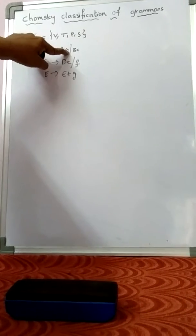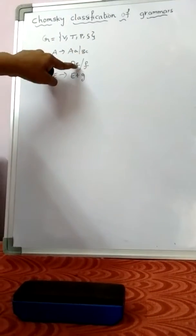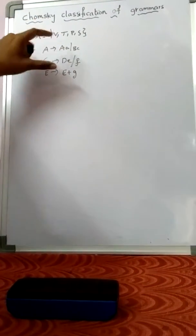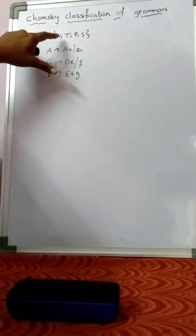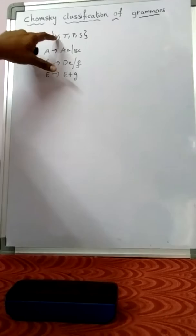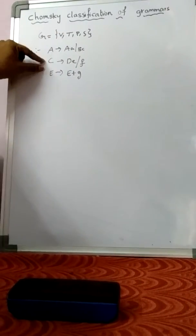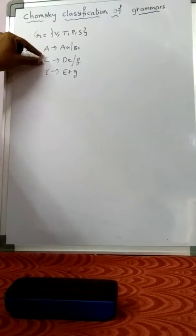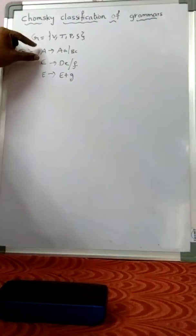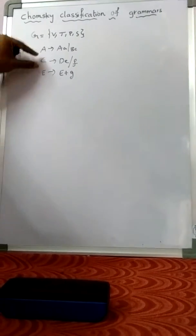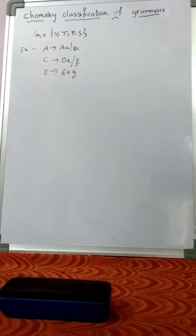Small letters like A, C, E are terminals. And V means variables or non-terminals. Variables include A, C, E, D — these are variables or non-terminals.